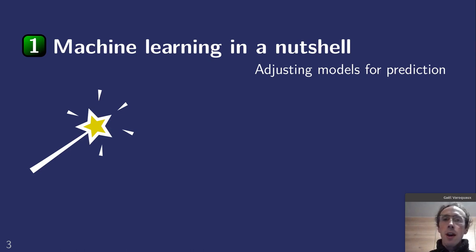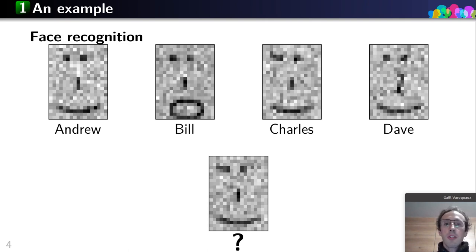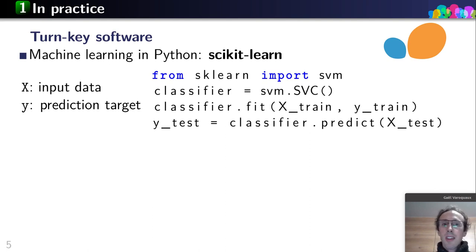Machine learning is really about adjusting models for prediction. To give a simple example, I can have pictures of my friends taken during my holidays and I want to teach the computer to associate the pictures to the name of my friend. I'll train the computer to do this association, and then the challenge will be: given a new image, can the computer conclude on the name of the friend? In practice, this involves picking up software such as scikit-learn, instantiating the models, giving them the data and the prediction target, fitting on the training data, and testing on the test data to get predictions — as easy as a few lines of Python code.